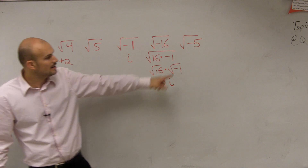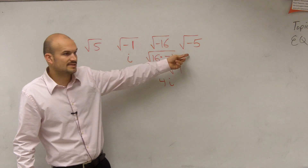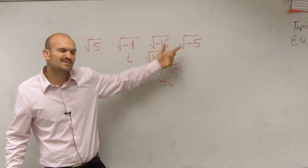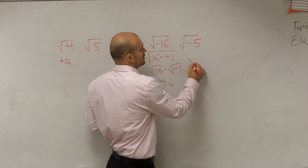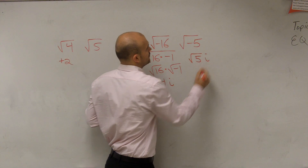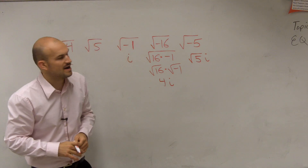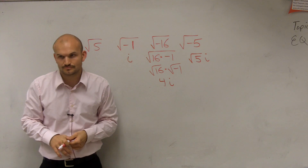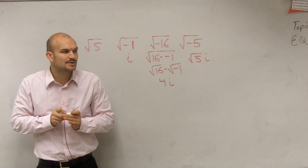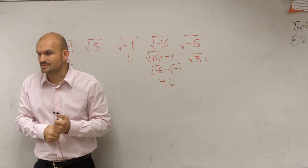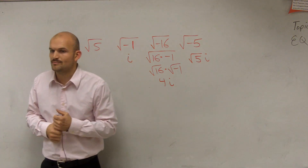For the next problem, can we take the square root directly? No, we still can't. But we can now rewrite it as the square root of 5 times i. That's some of the reasons why we use the imaginary number system — it allows us to do mathematics for numbers that we don't have in our real number system.